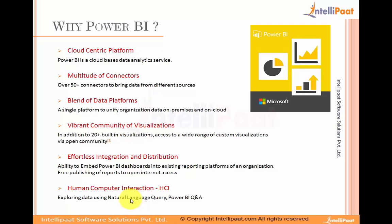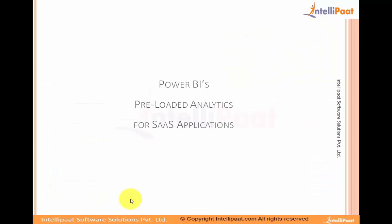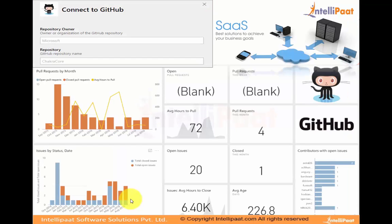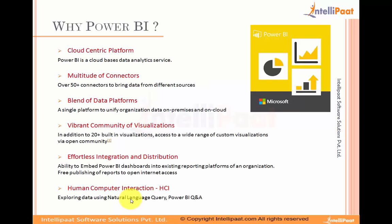Now for the differentiating factor — the unique factor that no BI tool has done so far: human-computer interaction, exploring your data using natural query language. Power BI also has pre-loaded analytics for SaaS applications. For example, GitHub — an open-source code hosting platform — if you just have a subscription and log in, Power BI auto-renders a set of analytics. You don't need to start from scratch; you get something pre-built that you can then modify, recreate, or enhance.